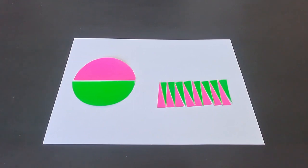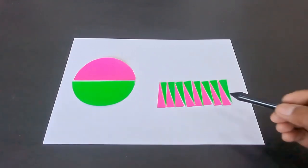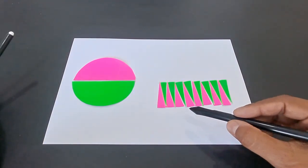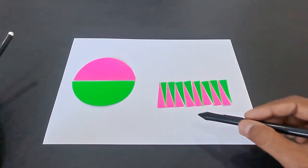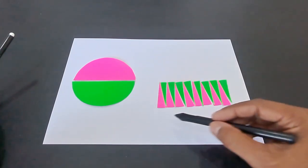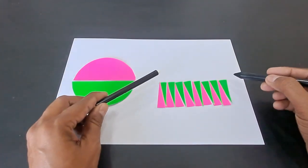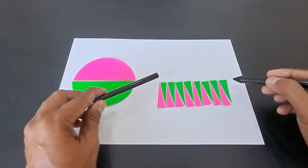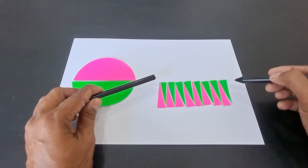So after you arrange all the 16 sectors like this in a particular pattern, you will observe that you obtain a rectangle. This is looking more like a rectangle, but you may argue because the width of the sectors is quite a lot.